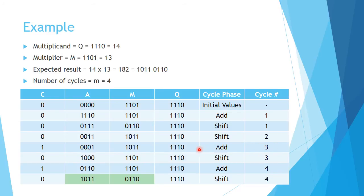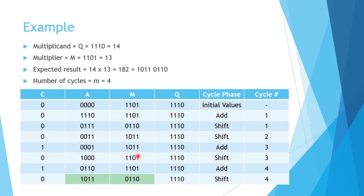In cycle 3, we do a multiply and add. The rightmost bit of the multiplier is 1, so we add 1110 to the accumulator, which is currently 0011. 1110 plus 0011 gives us 0001 with a carry of 1. We then do a shift: the carry of 1 becomes the leftmost bit of the accumulator. The least significant bit of the accumulator, which was a 1, becomes the most significant bit of the multiplier, and the previous rightmost bit of the multiplier is discarded.